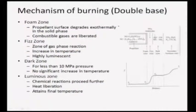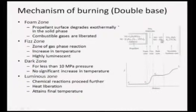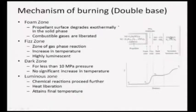After the luminescent zone, there is a dark zone. The dark zone is typically present if the pressure is less than 10 MPa - there is no significant temperature increase there, only some convection and mixing. After the dark zone, there is the secondary luminous zone where heavier molecules like NOCO, NO, NH2 further break down into more fundamental molecules like carbon dioxide and water vapor. In this secondary luminous zone the chemical reactions proceed and get completed, and the final temperature is attained.